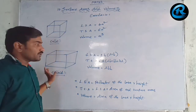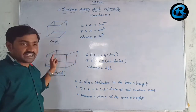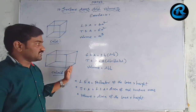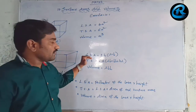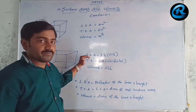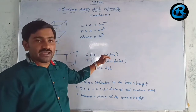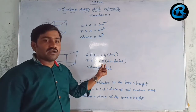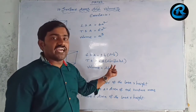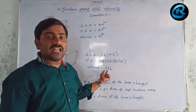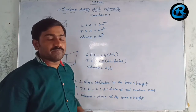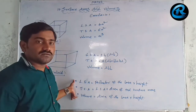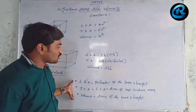Let us go to the cuboid. A cuboid is made up of rectangular sections, so it will have length, breadth, and height. The lateral surface area of a cuboid is 2h(l + b). The total surface area is 2(lb + bh + hl). The volume of a cuboid is l × b × h.